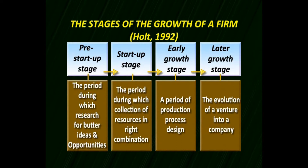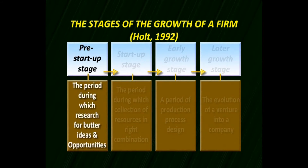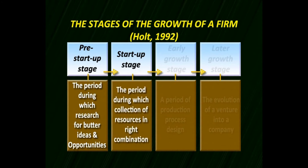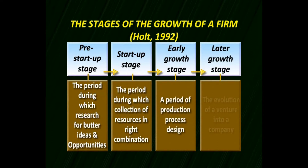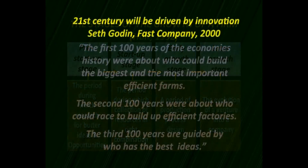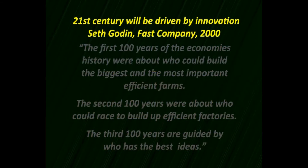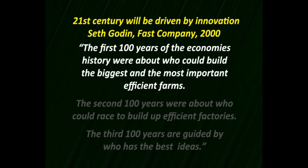The stages of growth of a firm are given by Holt. Every firm has four stages: the first is the pre-start phase, which is the period required to research a particular idea or opportunity. Then the startup phase requires the collection of resources in the right combination. The early growth stage is the production stage where the production process is designed. The last stage is the evolution of the venture into a company that distributes products to society.